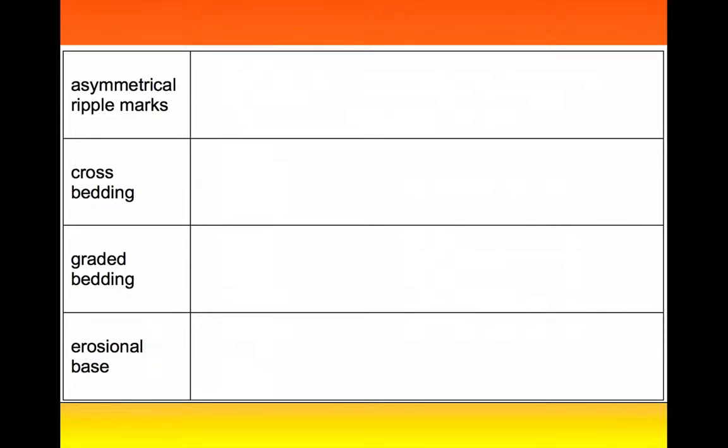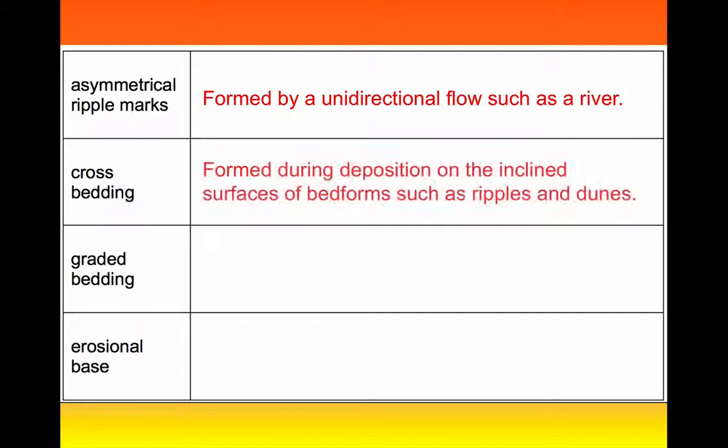Okay, we can see we've got four different features here. The asymmetrical ripple marks are an indication of a unidirectional flow. That could be the wind, could be the river, but something flowing in one direction. Cross bedding again forms in a unidirectional flow, and it's formed when there's deposition on an inclined surface of things like ripples or dunes even. Again this could be formed in a river or in the wind.